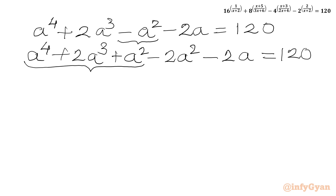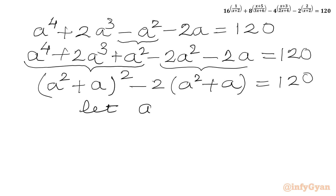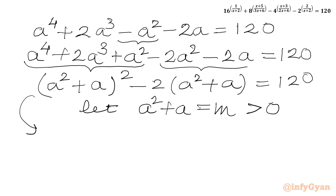Now from the first three terms I can write this is the perfect square of (a squared + a). Minus 2 is common from the last two terms, giving (a squared + a) in the bracket. Right hand side is 120. Now I will consider a squared plus a equal to m. Once a is positive, m must be positive. So we will get the equation in m as m squared minus 2m equals to 120.